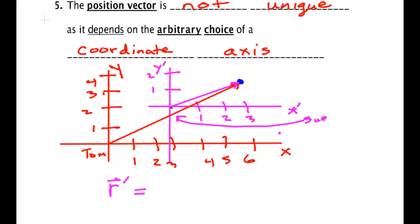According to Sue, she sees it goes one, two, three meters in the X and about a meter and a half along the Y. So three meters i hat plus 1.5 meters j hat. That would be the only correct answer if asked for the position vector of the ball as seen by Sue.